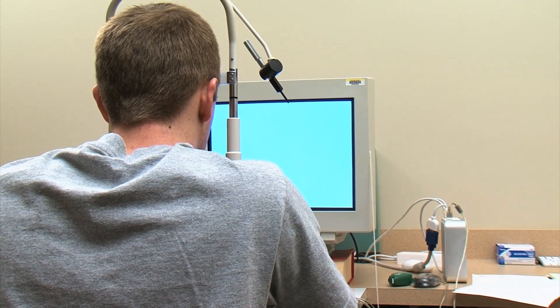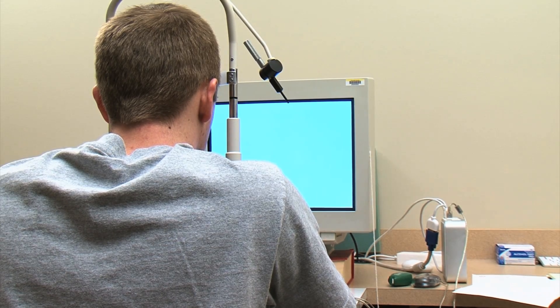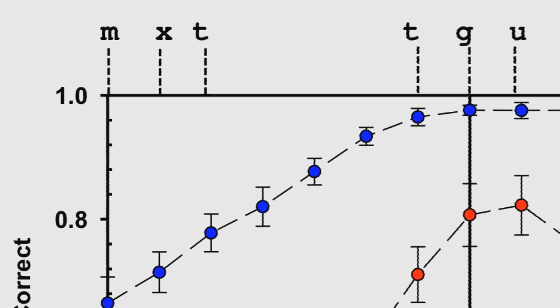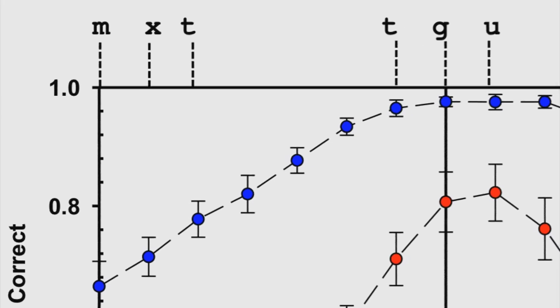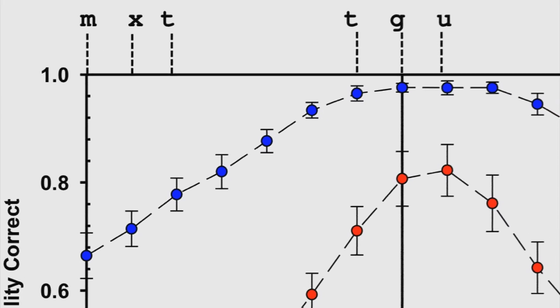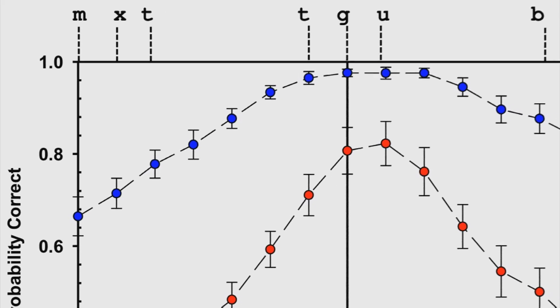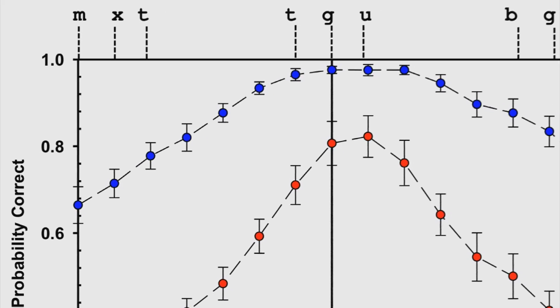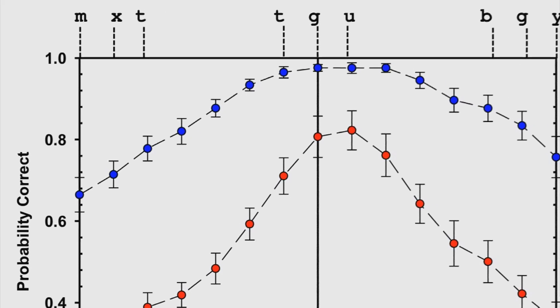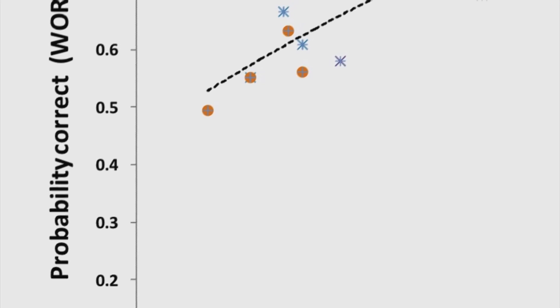Your ability to discriminate three consecutive random sequences of letters is only 40% correct. But if those random three letters are replaced with an actual word that belongs to your lexicon, you'd be able to get it correct almost 70% to 80% of the time.